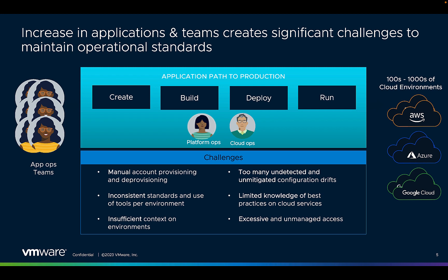There are significant challenges to maintaining operational standards. These include manual account provisioning and deprovisioning, which can be time consuming and error prone, leading to security risks if accounts are not properly deprovisioned when someone leaves the organization. Inconsistent standards and use of tools per environment can make it difficult to manage and maintain environments. Insufficient context of environments can make it difficult to troubleshoot issues. Configuration drift occurs when the configuration of a system or application changes over time, either intentionally or unintentionally, leading to inconsistencies and errors that can be difficult to detect and resolve.